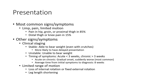Stable slip: the patient is able to bear weight. Unstable slip: the patient is unable to bear weight and has acute symptoms lasting less than 3 weeks. Chronic presentation is more than 3 weeks. Acute-on-chronic — gradual onset with sudden worsening — is the most common. Time from initial symptoms to diagnosis is typically 8 weeks. Findings include limited range of motion, loss of internal rotation, fixed external rotation, and leg length discrepancy.